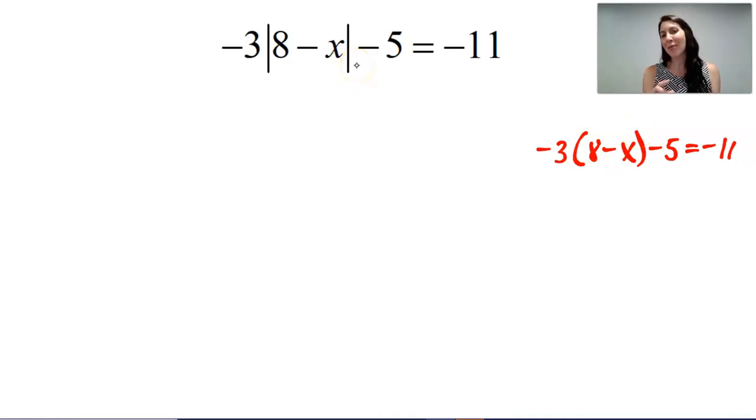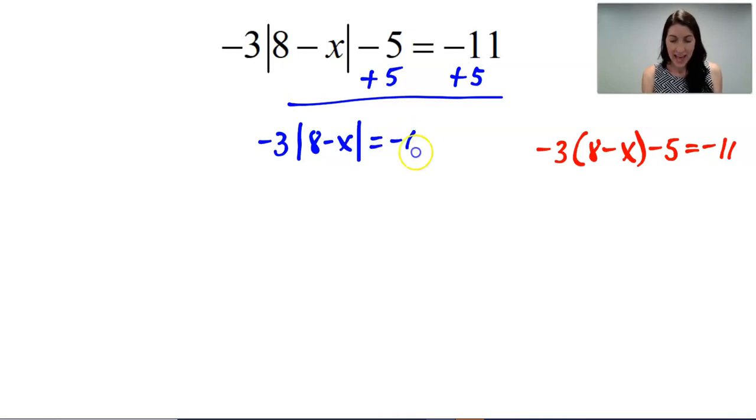So just a reminder here, we cannot distribute in negative 3. And instead, I should add 5 to both sides of the equation and divide by negative 3 because negative 3 is being multiplied to the absolute value. So to undo the multiplication, we want to divide.